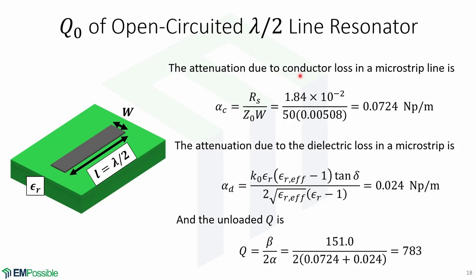Now we calculate the attenuation due to conductor loss in a microstrip line using the appropriate formula. For copper, the surface resistivity gives a conductor attenuation of 0.0724 Np/m. The attenuation due to dielectric loss in a microstrip is given by another expression, and plugging in the numbers gives this result. The unloaded Q equals beta over 2*alpha, summing the dielectric and conductor loss contributions, and is equal to 783.